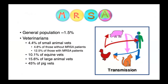We know that veterinarians working with sick animals, working with animals who have infections, working in highly selective environments where we have antimicrobial use, are more likely to be colonized with MRSA than the general population. Some older studies found that 4.4% of small animal veterinarians were MRSA positive — about three times the rate of the general population. Those who worked with MRSA patients were even more likely — 12.5% of those individuals. Approximately 10% of equine vets, 15% of large animal vets generally, and 45% of swine veterinarians were colonized with MRSA.